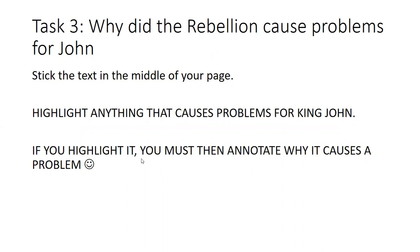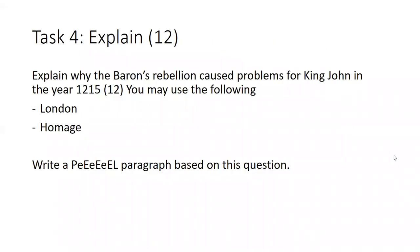The final task is a PEEL paragraph — a 12-mark question: explain why the barons' rebellion caused problems for King John. Focus on one key cause of the problem. A PEEL paragraph might be a stretch, so a medium PEEL is fine. Give yourself six minutes to write this paragraph. The next lesson will focus on why the Magna Carta happened and why King John ended up breaking it.